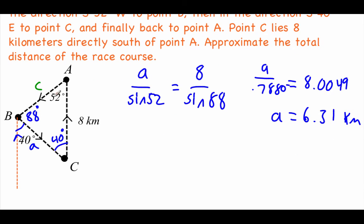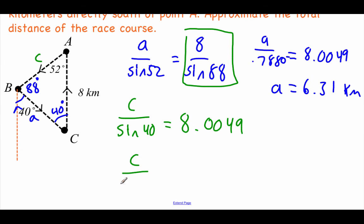If we're looking at finding side C, we're going to go C over the sine of 40 degrees. And I'm going to use this same B information from earlier. We already typed that into our calculator and got 8.0049. If we do the sine of 40, we end up with C over 0.6428 equals this 8.0049. And multiplying that decimal over to the other side, we get the length of C to be about 5.15 kilometers.